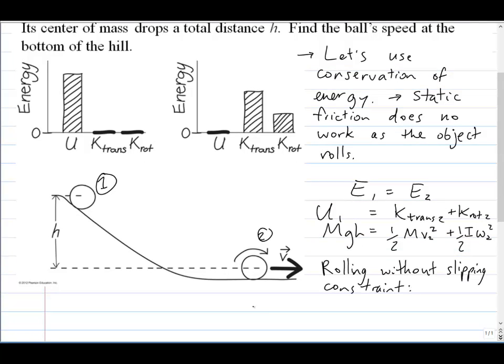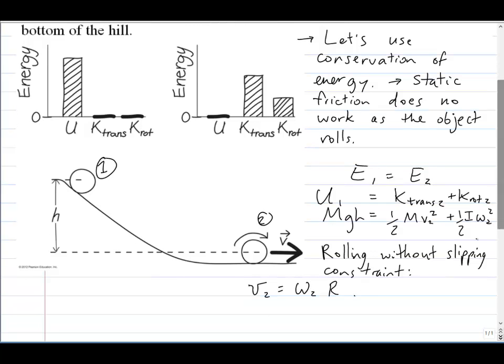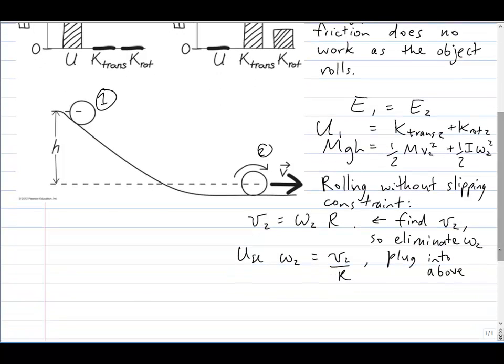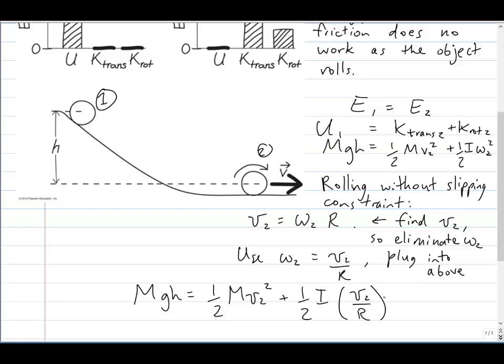And the rolling without slipping constraint, remember, as this thing moves, is v2 is equal to omega 2 times r. And we actually want to find v2 here in this question, so let's eliminate omega 2 by solving for it. And so v2 over r, plug that into our energy conservation equation, we get 1 half mv2 squared plus 1 half I v2 over r all squared.